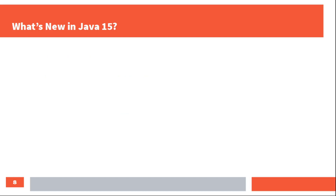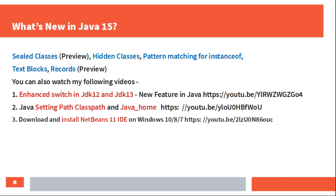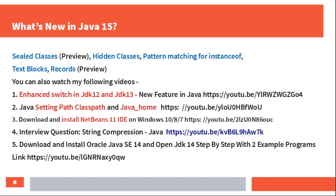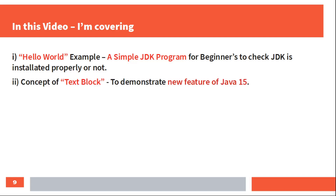Now, what is new in JDK 15? The concepts include Sealed Classes, which are called Preview Features, Hidden Classes, Instance Pattern Matching, Text Blocks, and Records concept which is also a preview feature. I have made some videos for you before which are linked. In this video, I will cover a Hello World example for beginners to check that JDK is working properly, and I want to demonstrate the Text Blocks concept which is a new feature.